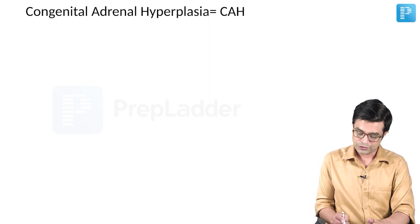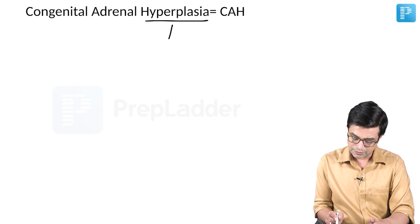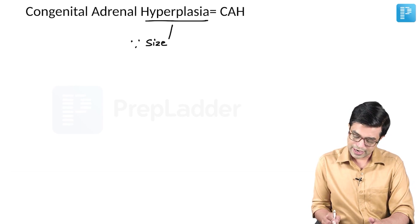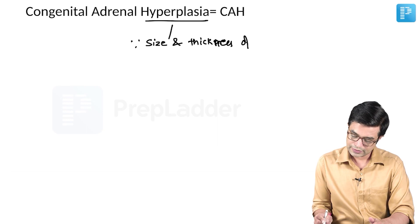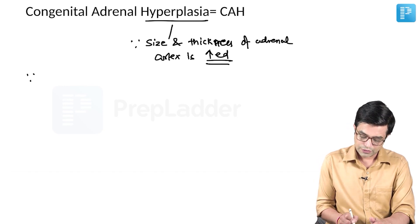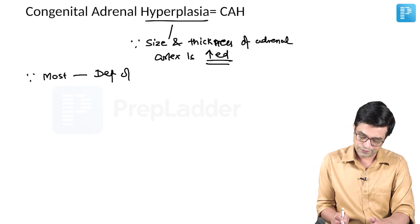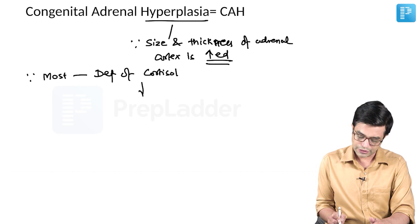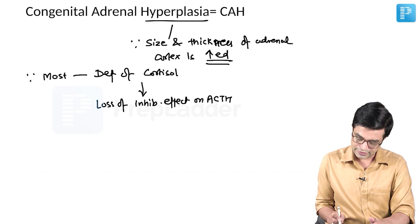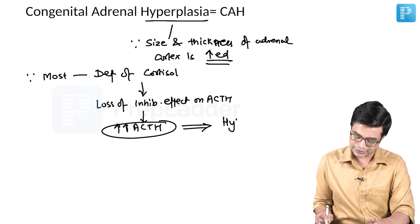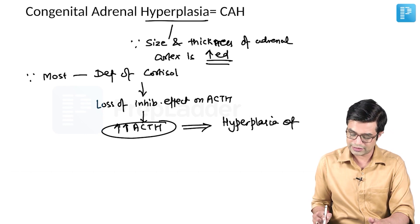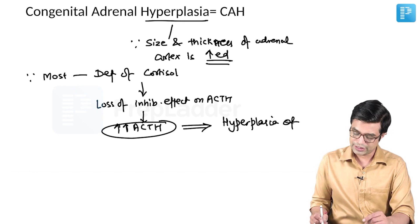Why do we call it hyperplasia? Because the size and thickness of the adrenal cortex is increased — there is hyperplasia of the cells. This is because most varieties have a deficiency of cortisol. This deficiency leads to loss of inhibitory effect on ACTH, resulting in large amounts of ACTH being produced, which causes hyperplasia of the gland. Size is more, but function is not there — that is called hyperplasia. Since it is congenitally present, we call it congenital adrenal hyperplasia.